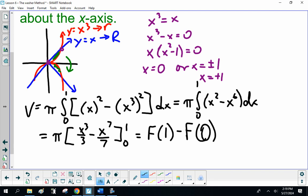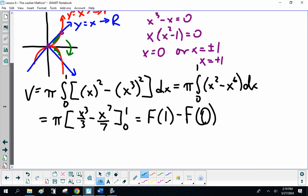F(1) - F(0). Now, if we plug in 0, this is going to be π times (1/3 - 1/7). Because f is 0. x³, 0³, 0 minus 0 to the 7th, 0. So, π times 0 is 0.